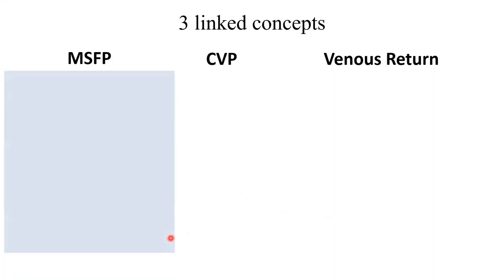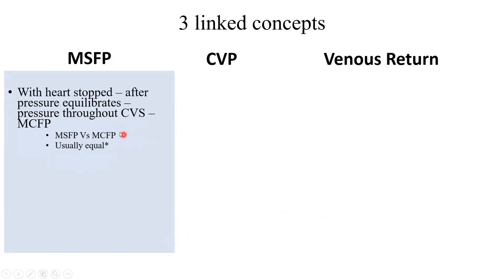The overview of MSFP: it is the filling pressure of the circulation, which can be measured if the heart is made to stop. That is the pressure throughout the circulation without the heart beating. In cardiac failure this comes into play, and also by clamping the big vessels at the root of the heart — temporarily disconnecting the heart from the circulation — you also induce MSFP in the circulation.